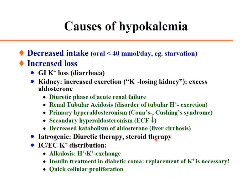Extracellular-intracellular potassium distribution is altered by pH: alkalemia with proton-potassium exchange promotes potassium uptake intracellularly. Insulin treatment in diabetic coma causes potassium to shift into intracellular stores — this is why potassium replacement is essential during insulin treatment. Rapid cellular proliferation can also store potassium intracellularly.